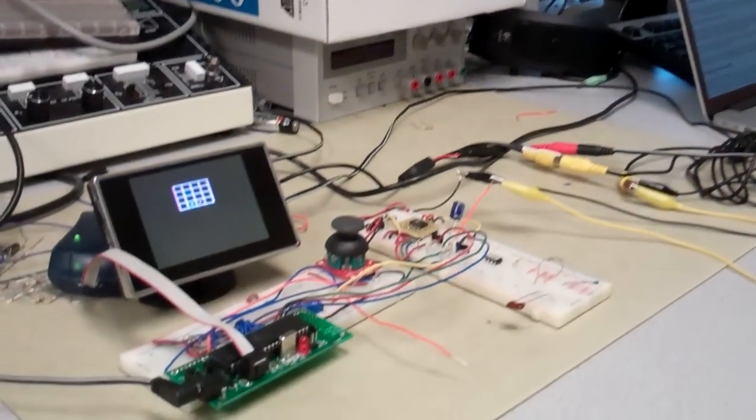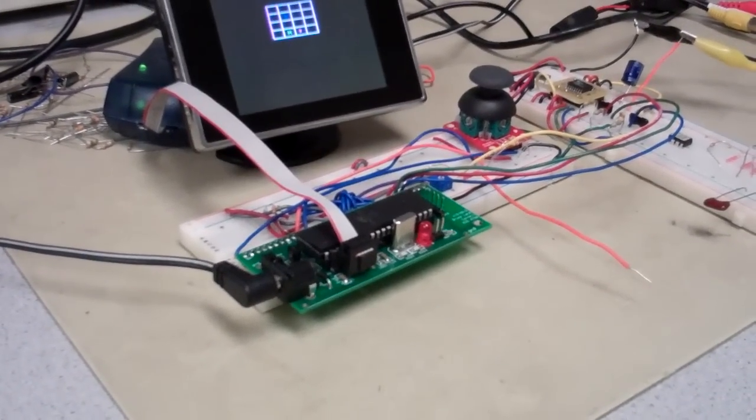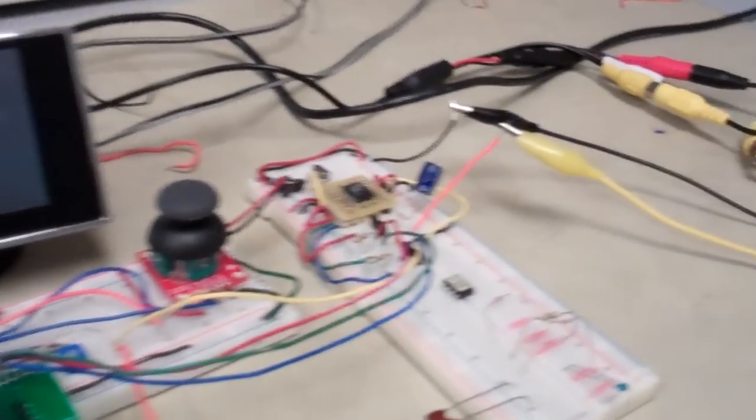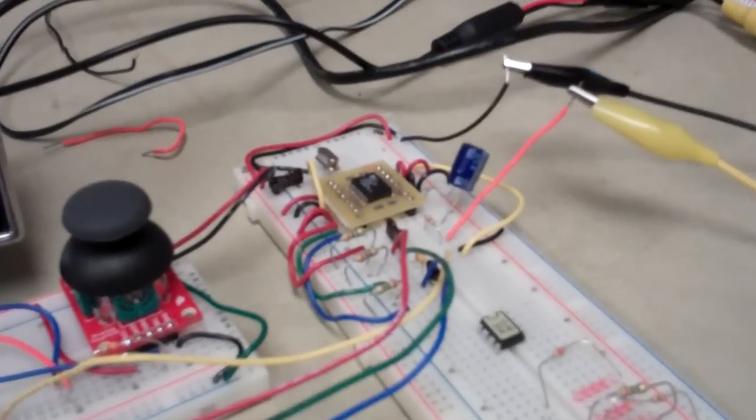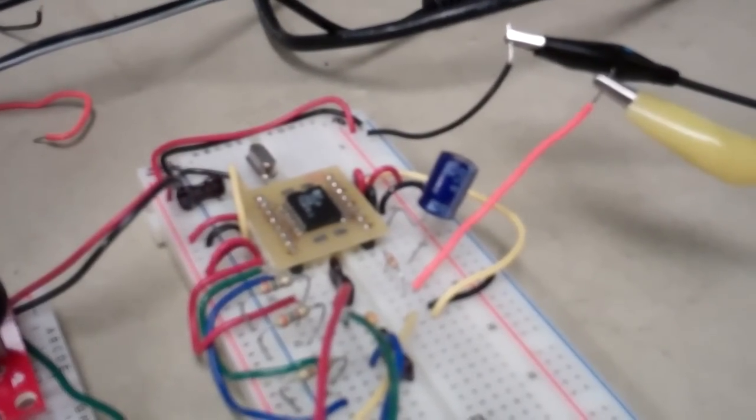So the ATmega isn't fast enough to encode color on its own, and so you have to put an external chip on there to actually encode the NTSC color so you can run television. Right, so we used the AD724 in addition to our chip to do the color.